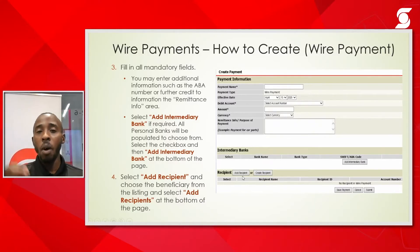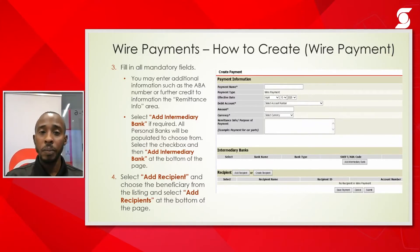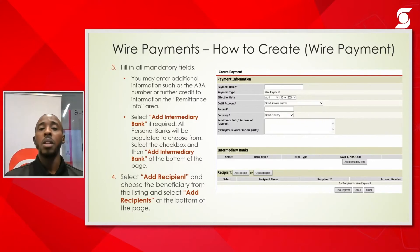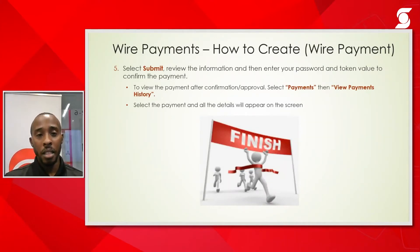Next, select 'Add Recipients' — only wire recipients will be listed, and you can only add one beneficiary to a wire payment. Find the wire recipient, select the check box, and click 'Add Recipient.' Both the intermediary bank and the beneficiary will now appear in the payment. Submit and review all information before hitting 'Confirm.' Once confirmed, the payment will be sent for processing. Going forward, since the bank and recipient are already on the system, all you need to do is go to Payments, Create Payment, select Wire Payment, complete the information, and submit and confirm.